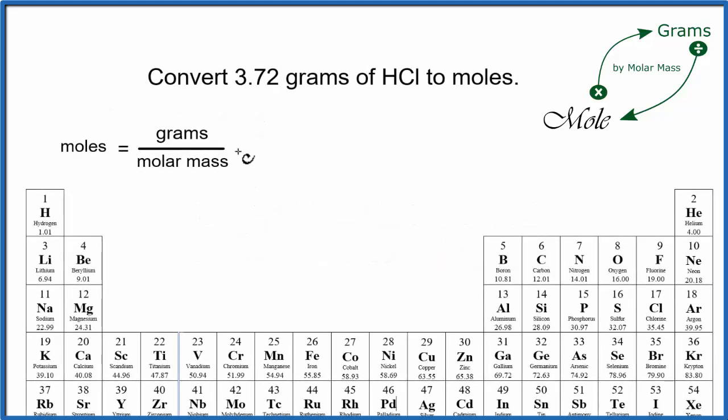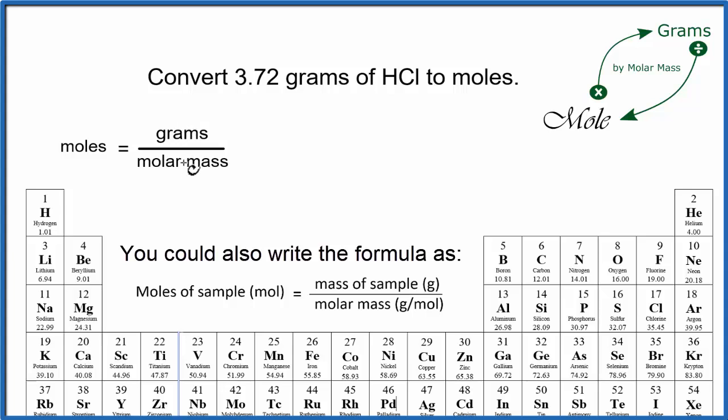Some people like to use a formula to convert from grams to moles and moles to grams. So you could use this formula. Let's try it out. We have moles equals grams over molar mass. So we have moles, our grams, 3.72 grams, and we'll divide that by the molar mass of HCl. So I look up H and Cl on the periodic table, add them together. I get 36.46, and that's grams per mole. My grams, those will cancel out, and I'll be left with moles. And when I do the math, I get 0.10 moles.